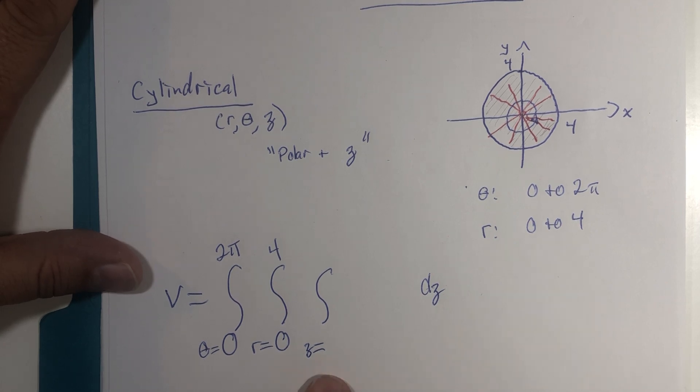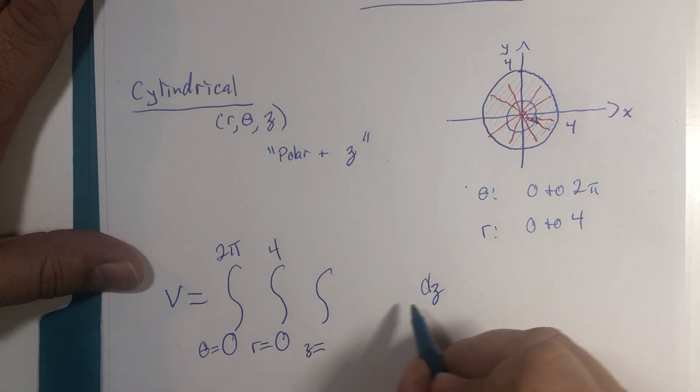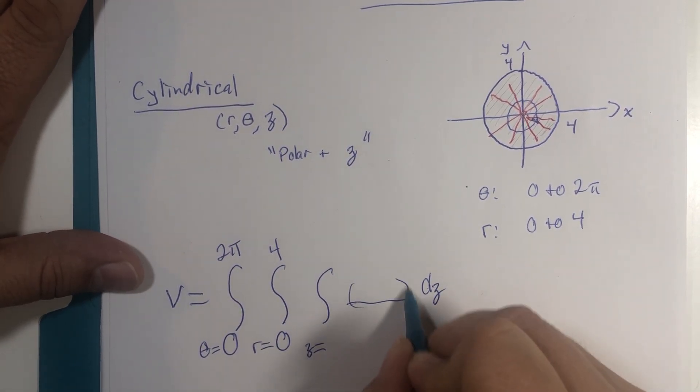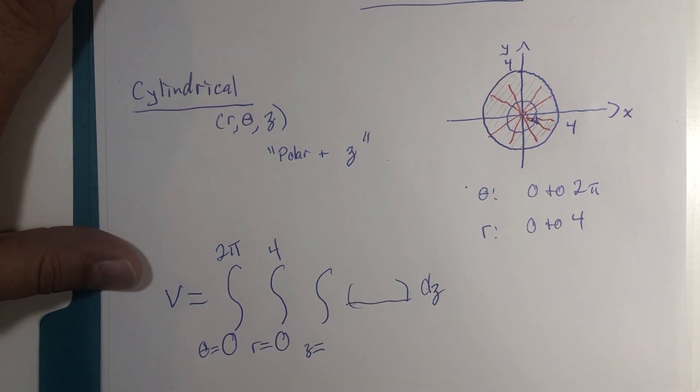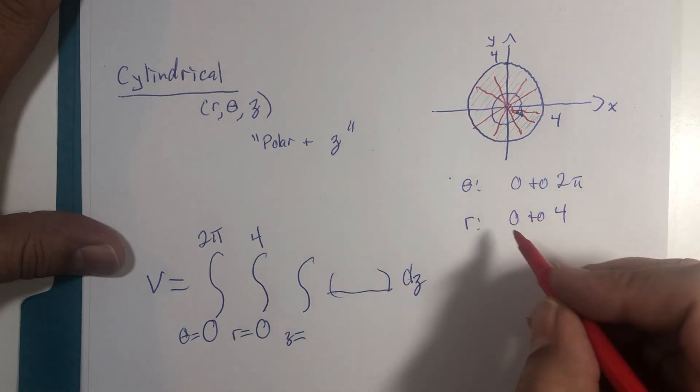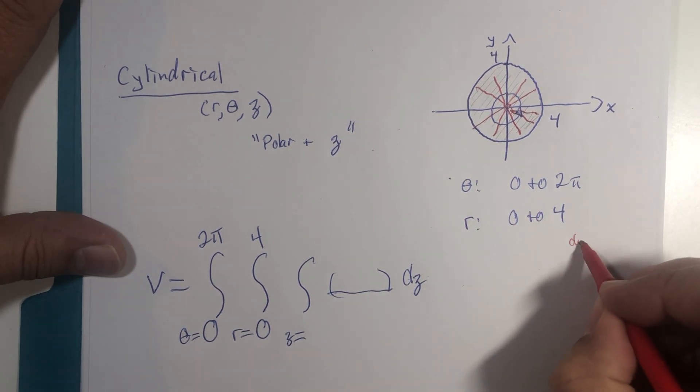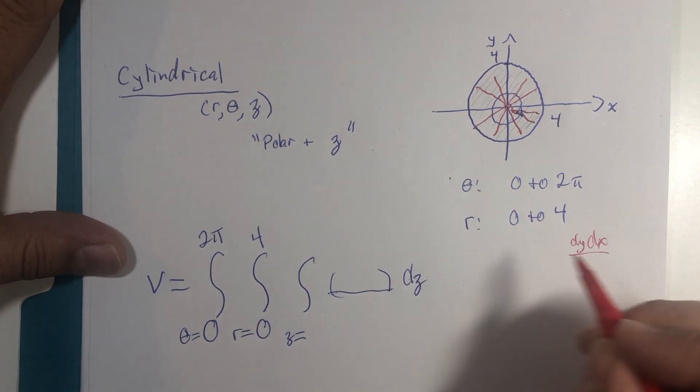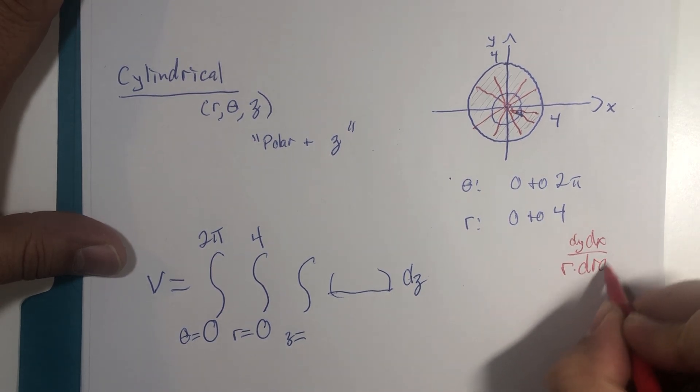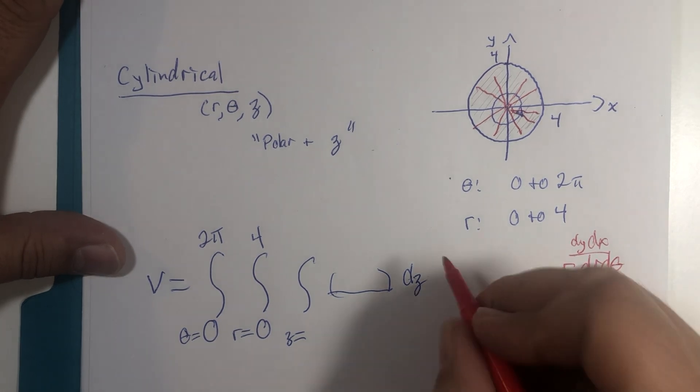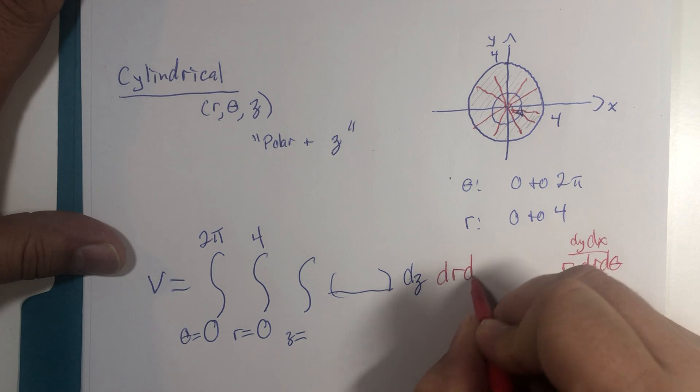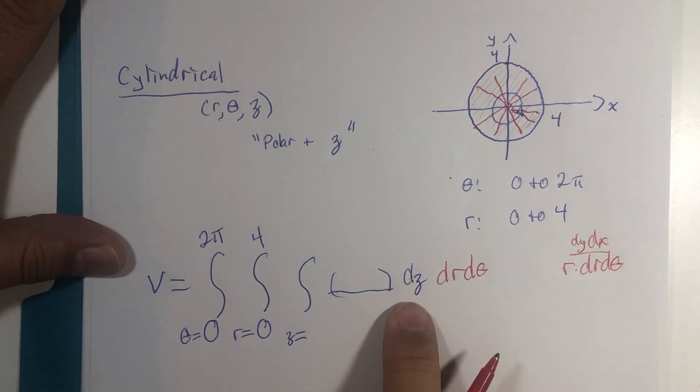We'll get there in just a second here. We had no function here, so there is nothing in this space. I just created too much space accidentally. But what used to be dy dx now needs to be converted to r times dr d theta.